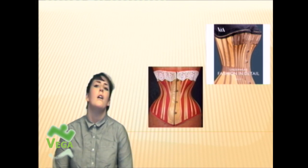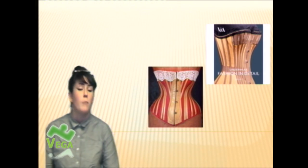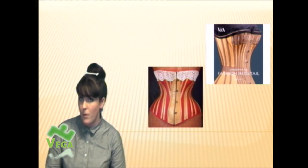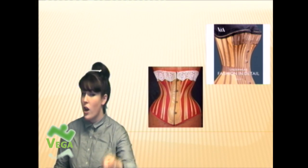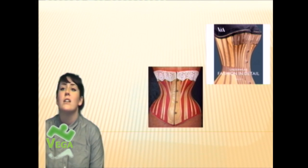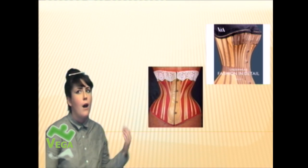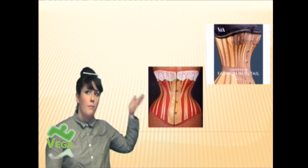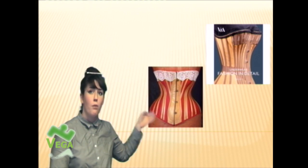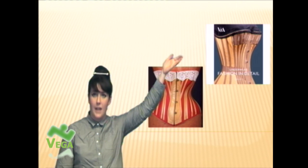Here is a corset on display at the Victoria and Albert Museum, which is fantastic and free. And this is a book about underwear that the Victoria and Albert Museum has. So that's primary and secondary.